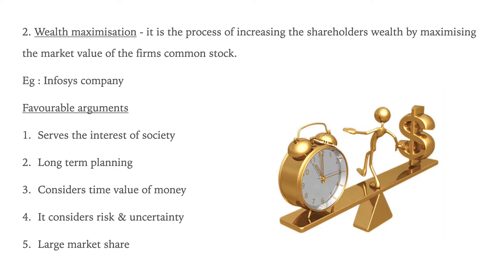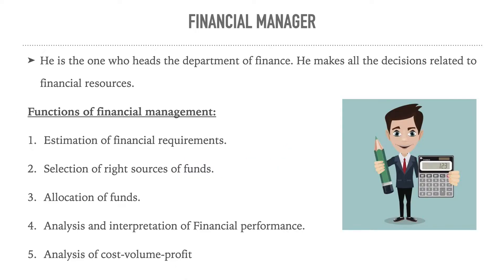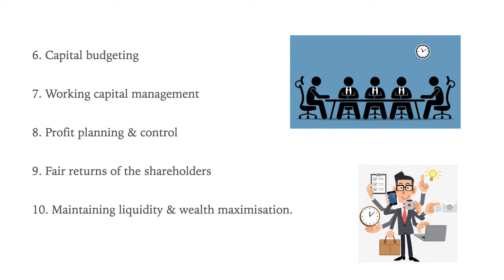Last class we started with the goals of financial management — wealth maximization, its favorable and unfavorable arguments. Later we moved on to who is a financial manager and the functions of financial management, looking at ten different points. This is a section C question, so I hope you understood it. I'll be passing out the notes to you shortly, and today we'll be studying what is a financial plan.